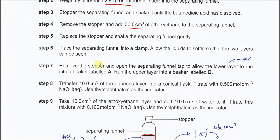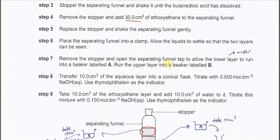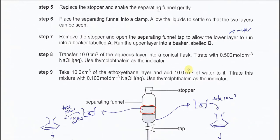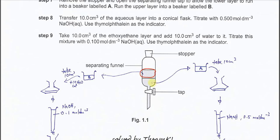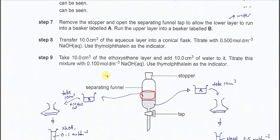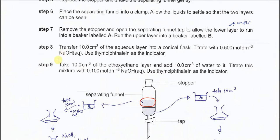After settling, remove the stopper and open the separating funnel. Allow the lower layer to run into the beaker labelled A, and run the upper layer into beaker B. So the lower layer, which is the aqueous layer, runs into beaker A, and the upper ethoxyethane layer runs into beaker B. These are then used for titration.